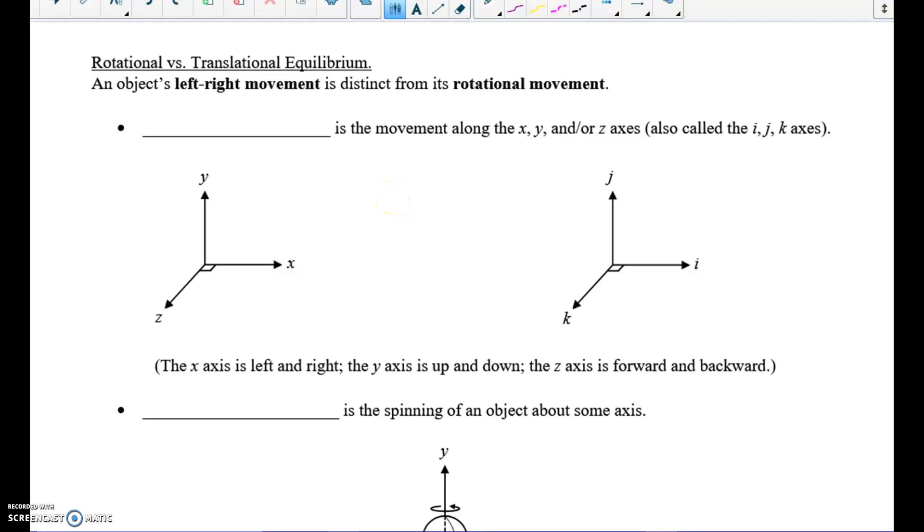We've started to see that there are two distinct ways an object can move. If we have an object like this, we could move it up or down along the y-axis, we could move it left or right along the x-axis, or we could move it forward and backward along the z-axis.